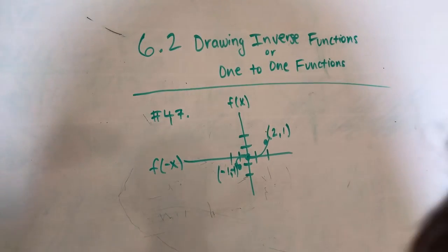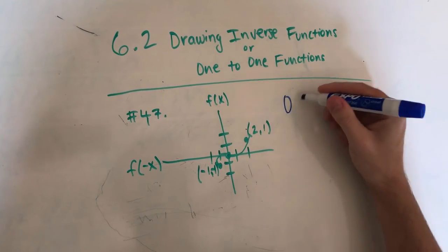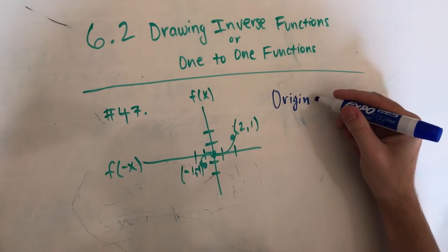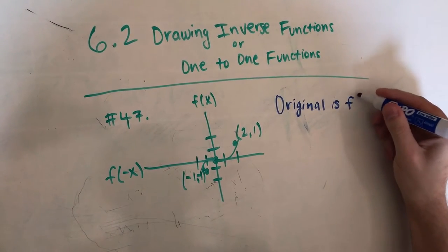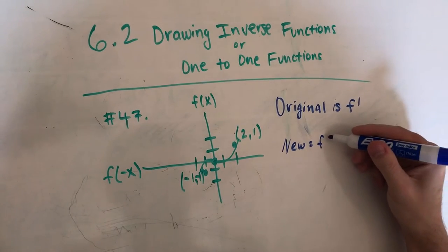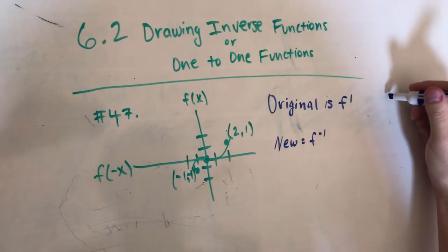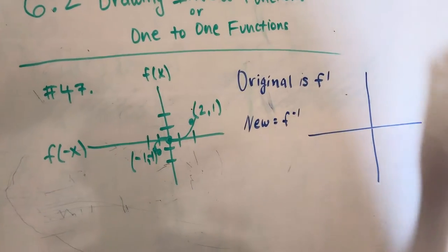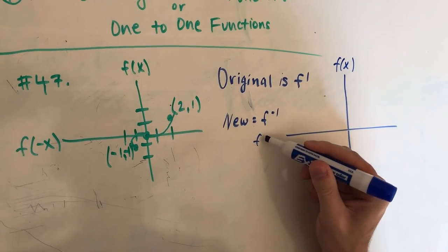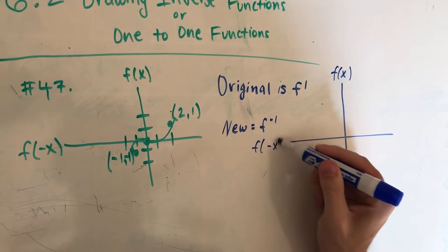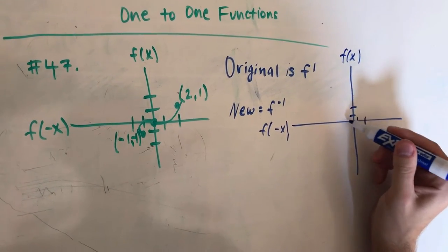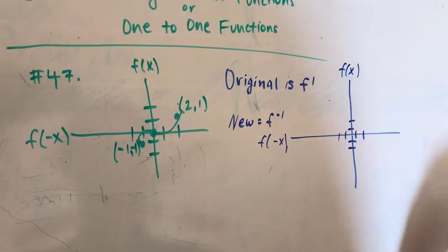I'm going to switch markers really quick. So this was pretty cool — the original is f of 1, and the new graph we're going to make is going to be f of negative 1. Our new graph is going to be right here. We have our f of x and we have our negative x right here. I had to look over to my other graph for that one. So we're basically just going to inverse most of it, but there's a small catch to it in the end.